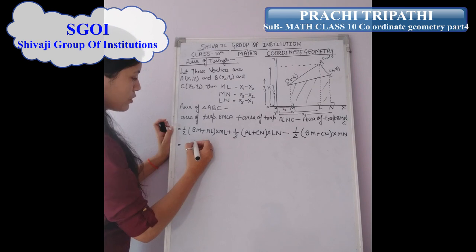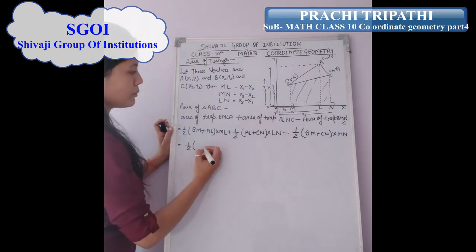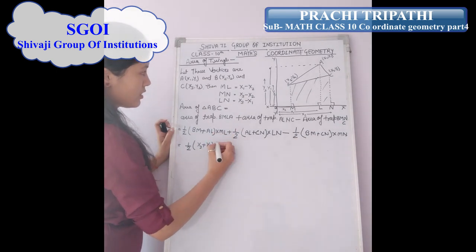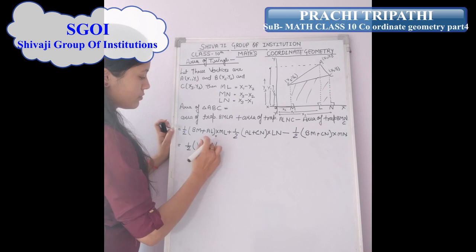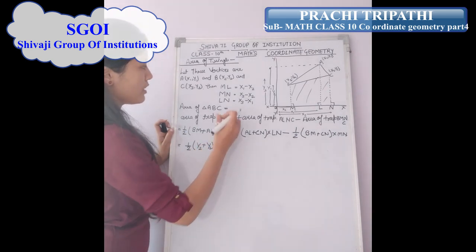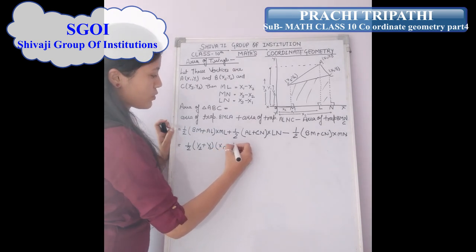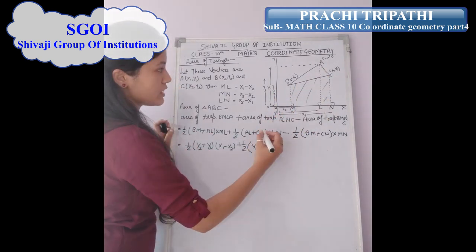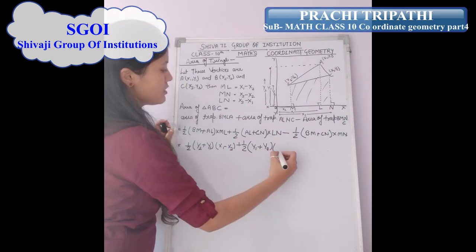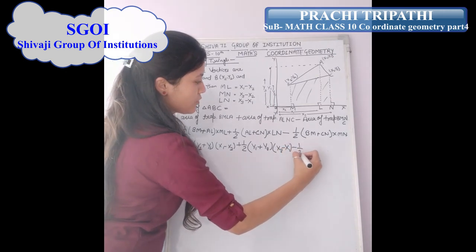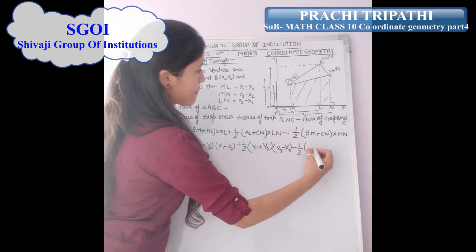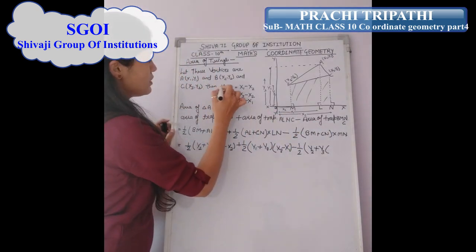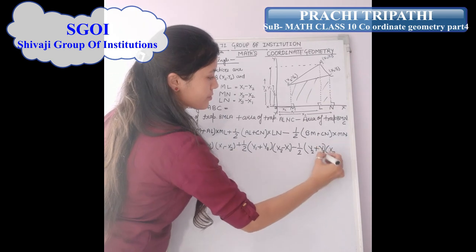Now put the values: BM is y2, AL is y1, and ML is x1 minus x2. Plus 1/2 times (y1 + y3) into (x3 minus x1). Minus 1/2 times (y2 + y3) into (x3 minus x2).